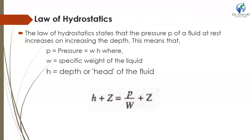Every liquid exerts pressure at its base, known as its weight. The pressure is dependent on the height of the liquid column and its density, irrespective of the shape or geometry of the container. Mathematically, hydrostatic pressure P = H × ρ × g, where H is the height of the fluid column, ρ (rho) is the density of the fluid, and g is the acceleration due to gravity.